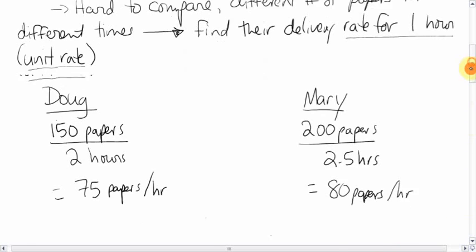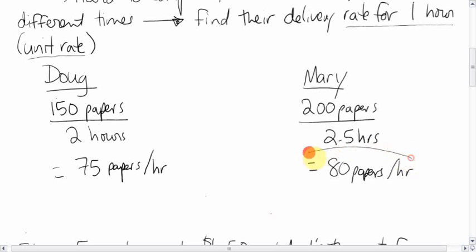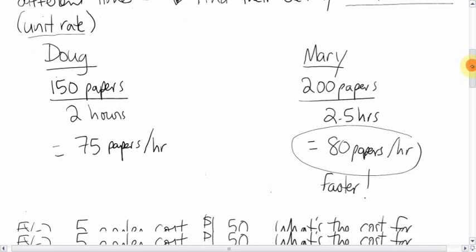And so obviously, Mary delivers more. She's able to deliver 80 papers per hour. She's the faster deliverer. Not by much, but it's pretty close.